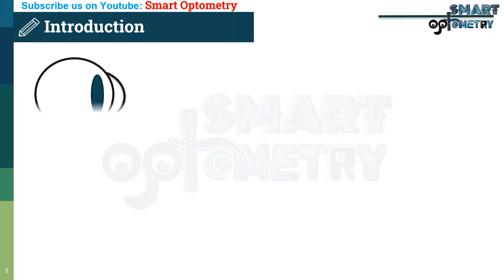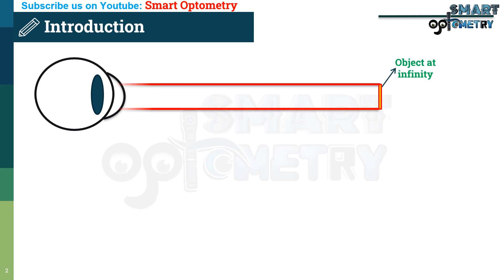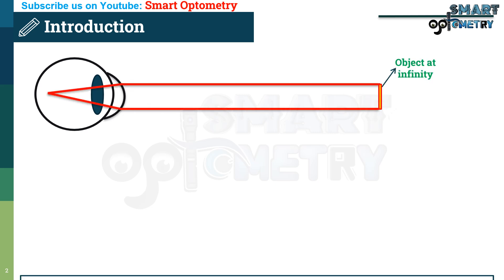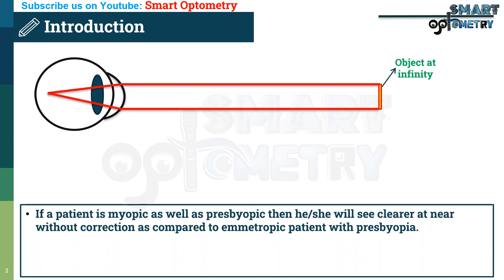Myopia is a condition where the total power of the eye increases and leads to focus in front of the retina. If a patient is myopic as well as presbyopic, then he or she will see clearer at near without correction as compared to an emmetropic patient with presbyopia.